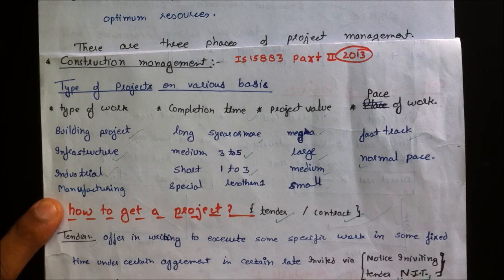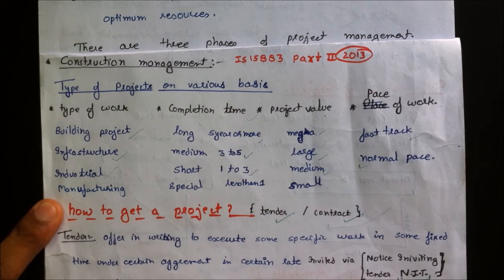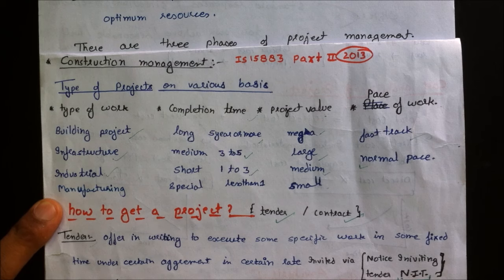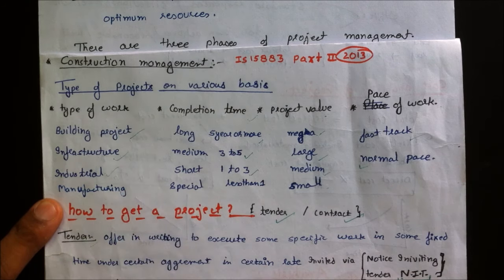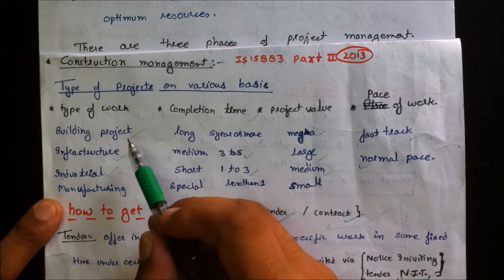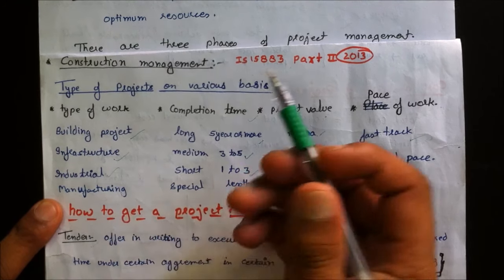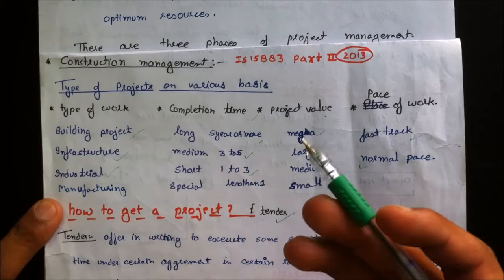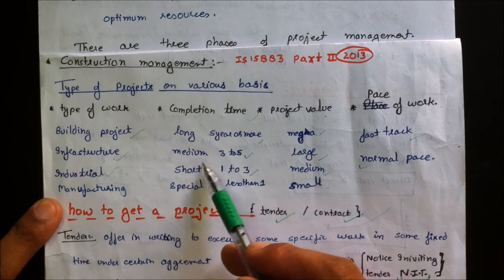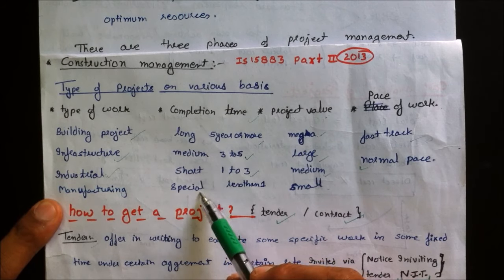After a brief introduction to project management, let us come to the types of projects as denoted in IS 15883 Part 2, recently upgraded in 2003. Projects are classified by various norms. The first classification is type: building project, infrastructure project, industrial project, or manufacturing project.